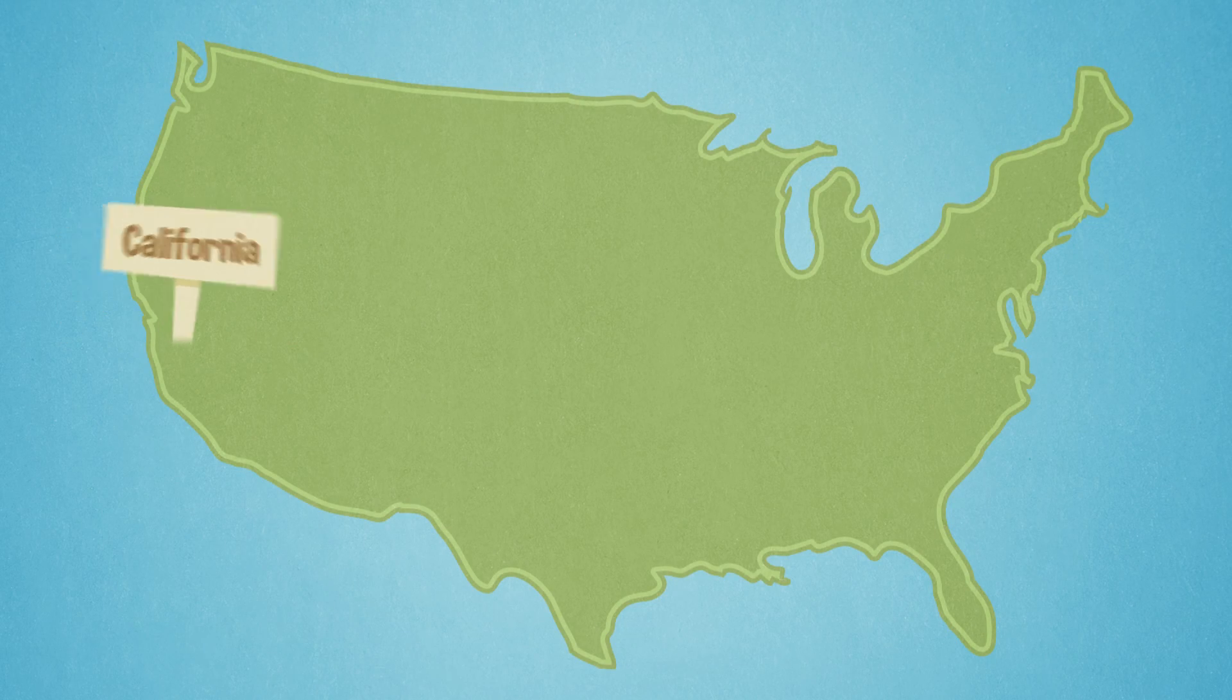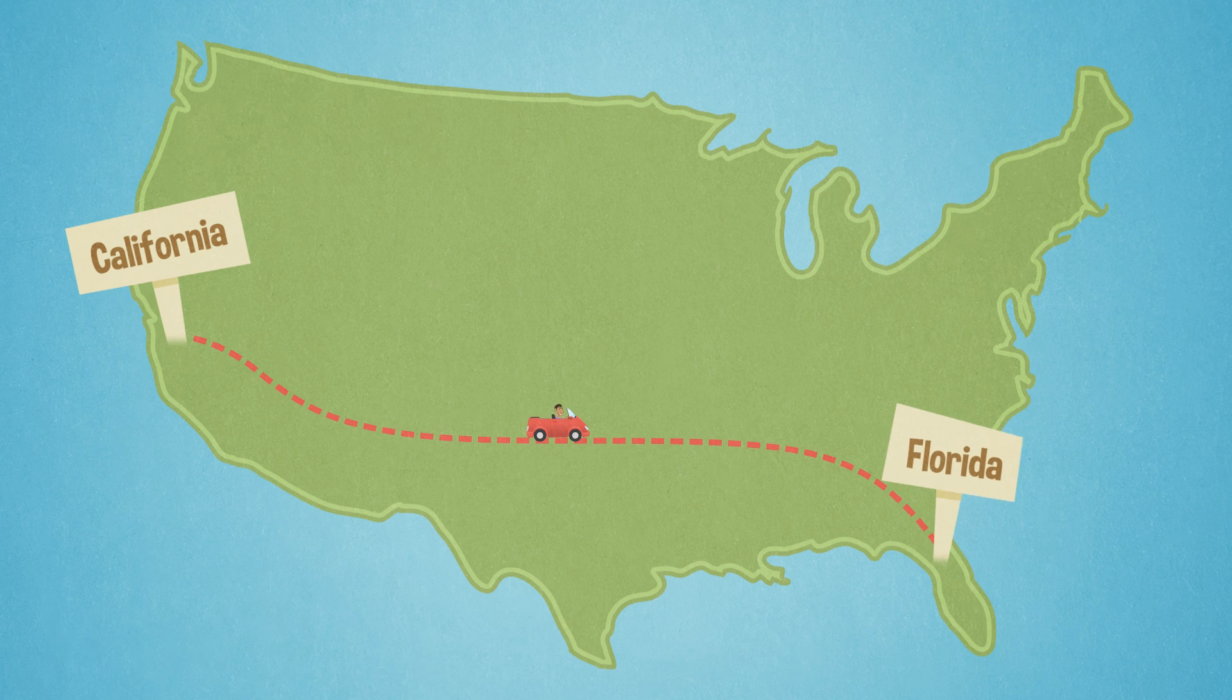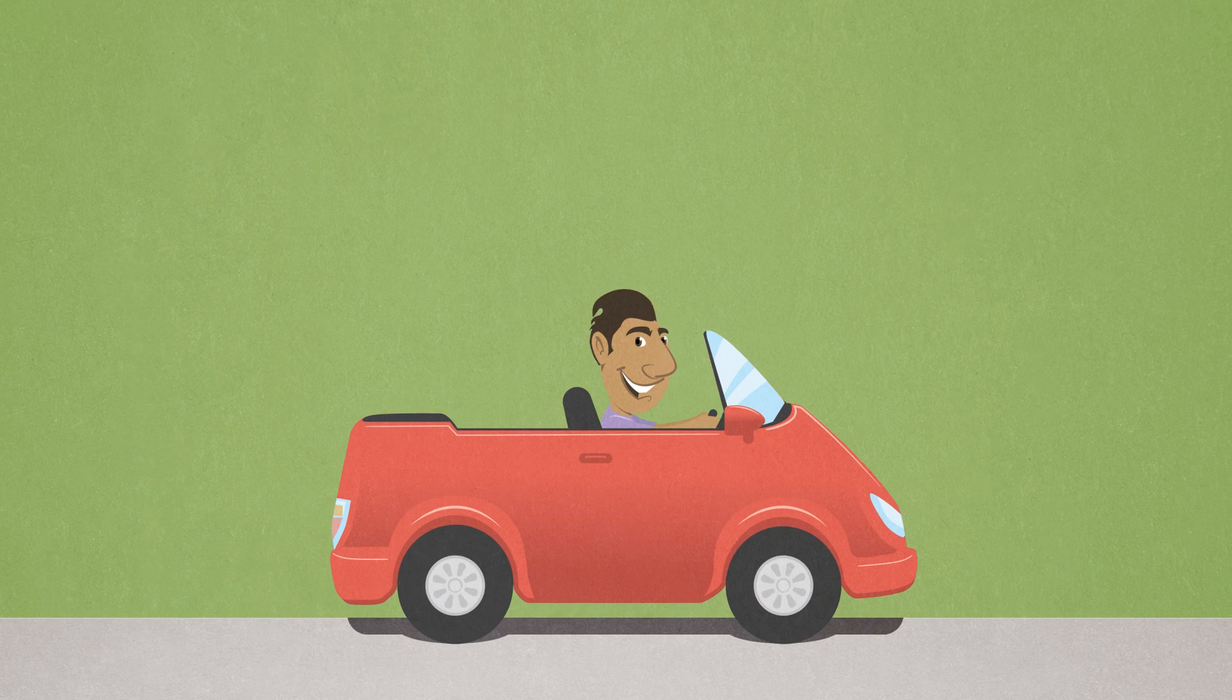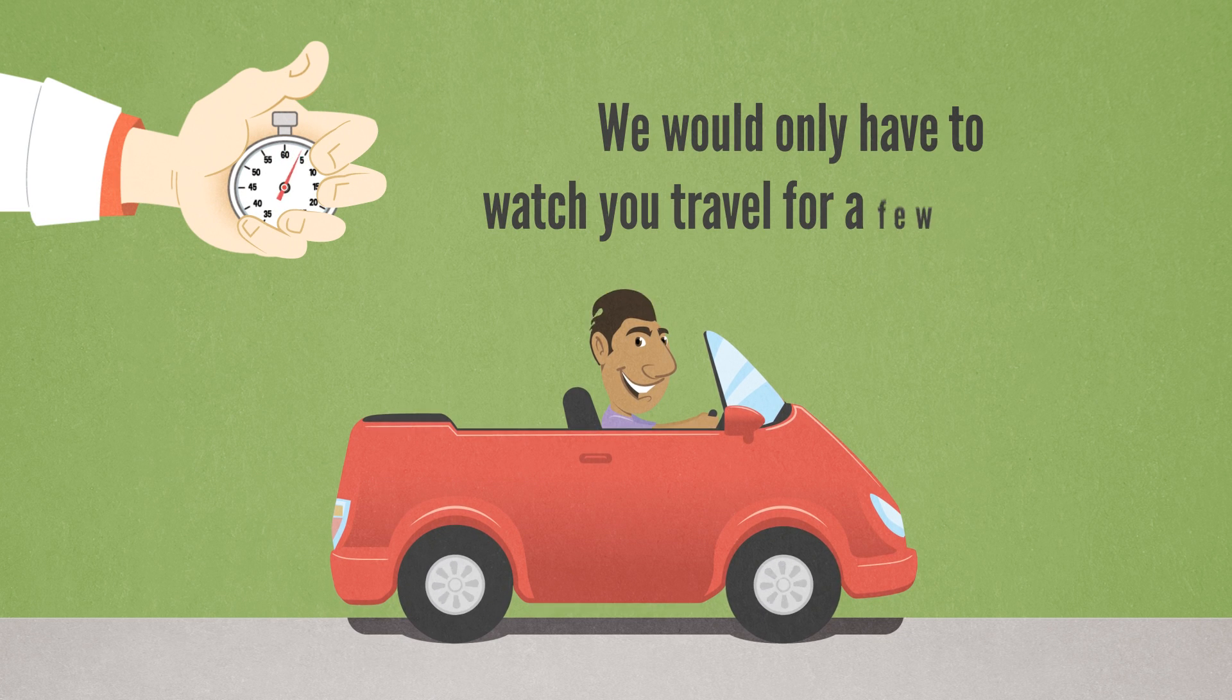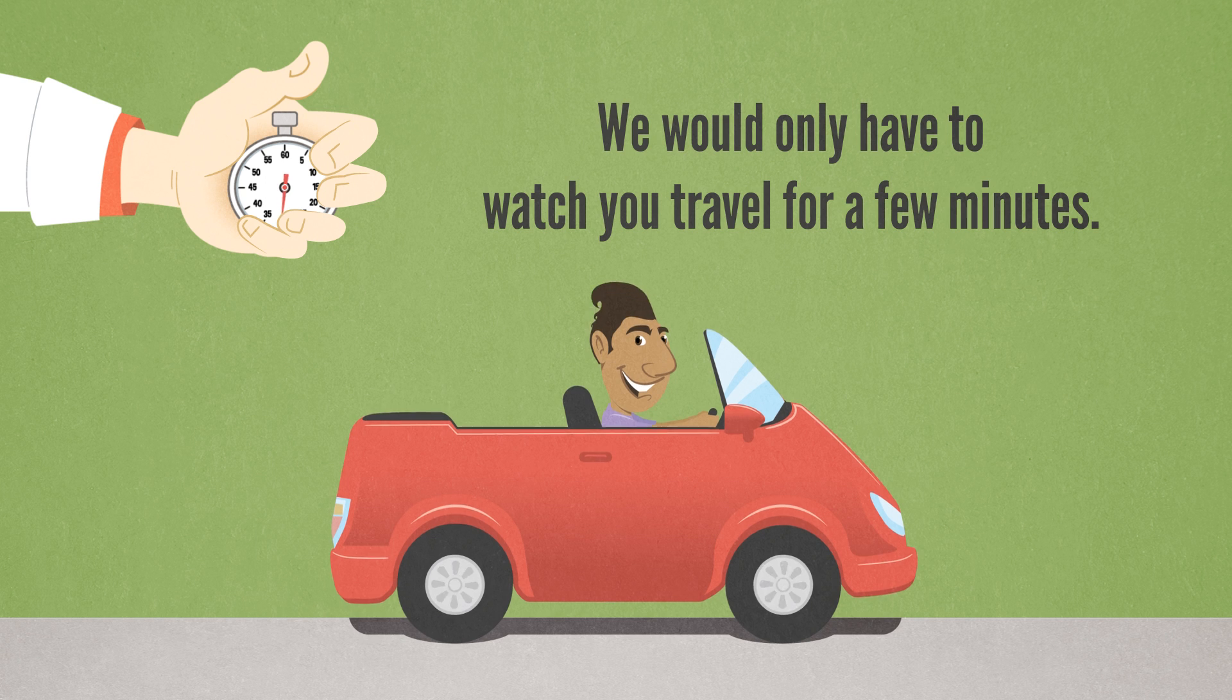Say you live in California and you're taking a trip to Florida. Now, let's assume your traveling speed is constant. Because we know the distance between California and Florida, we would only have to watch you travel for a few minutes to be able to use that speed to calculate how long your trip to Florida would take.